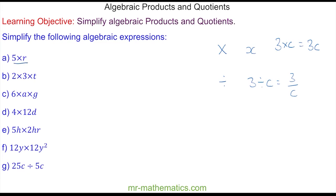We have 5 times r in question a. We do not include the multiplication, so this becomes 5r.